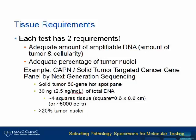In the slide review process, we are essentially looking at tissue for two requirements for each test: first, the amount of tumor tissue, and second, the percent tumor nuclei. Adequate amount and concentration of amplifiable DNA is often directly related to the amount of tissue present, and within that, we need to have an adequate percentage of tumor nuclei, which is based on each test's performance metrics, specifically the limit of detection. For example, our solid tumor 50 gene hotspot test, CAPN, currently requires 30 nanograms of DNA at a concentration of 2.5 nanograms per microliter.